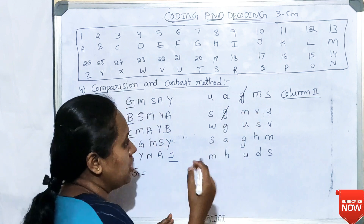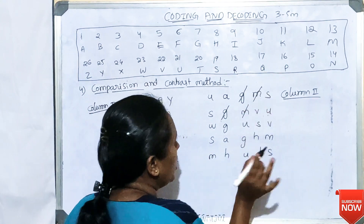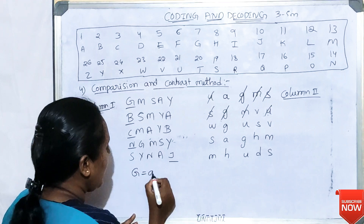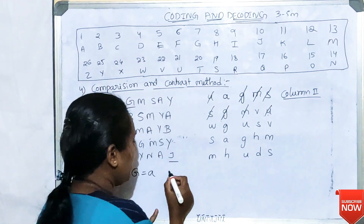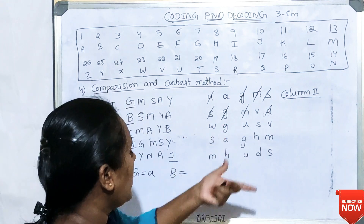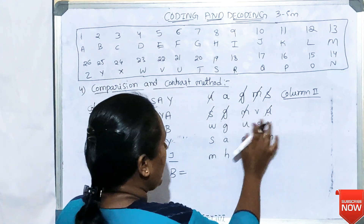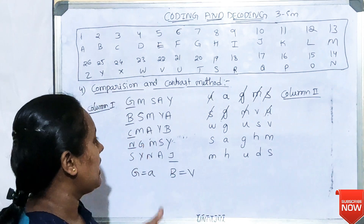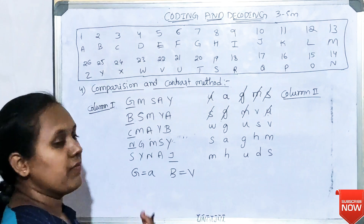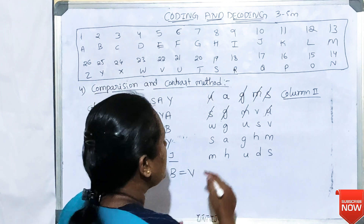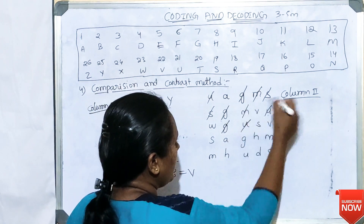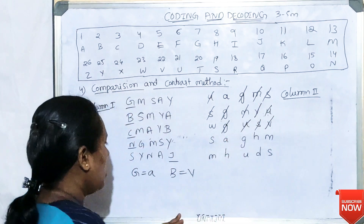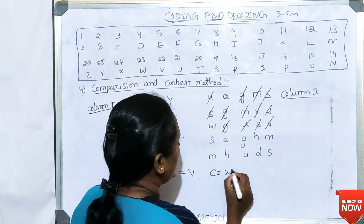In this comparison method: G is common in both rows — cancel it. M is also common — cancel it. S is also common — cancel it. U is also common — cancel it. After cancelling all common letters, G corresponds to A. For the second phrase, identify B's code by cancelling all common letters across rows; after cancellation, V is the code for B.